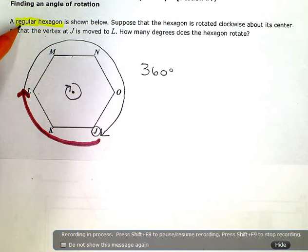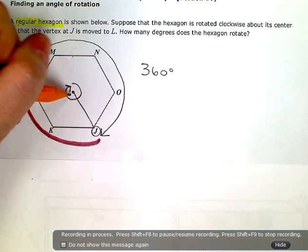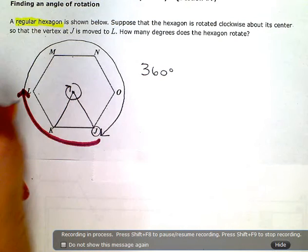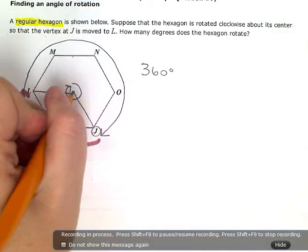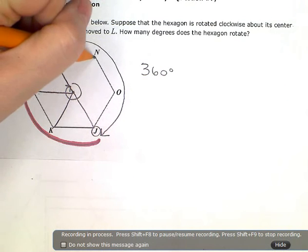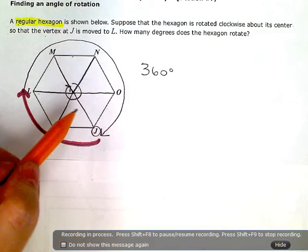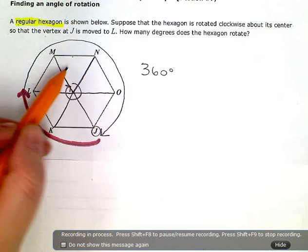Well, this is where the regular part of the hexagon comes into play. Because since it's a regular hexagon, meaning all the sides are the same and all the angles are equal, if I kind of wedge it out from the center or make triangles out of it, I know that every one of these triangles is exactly the same.